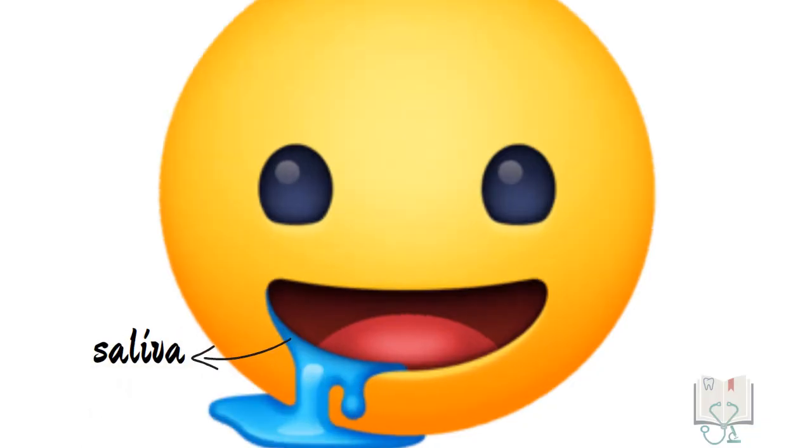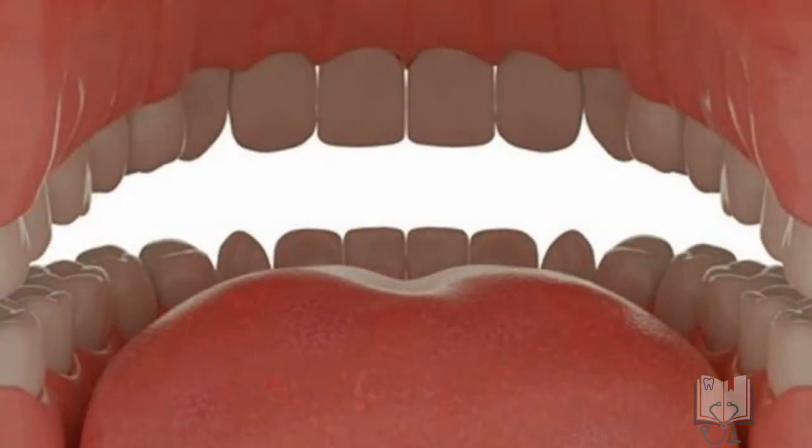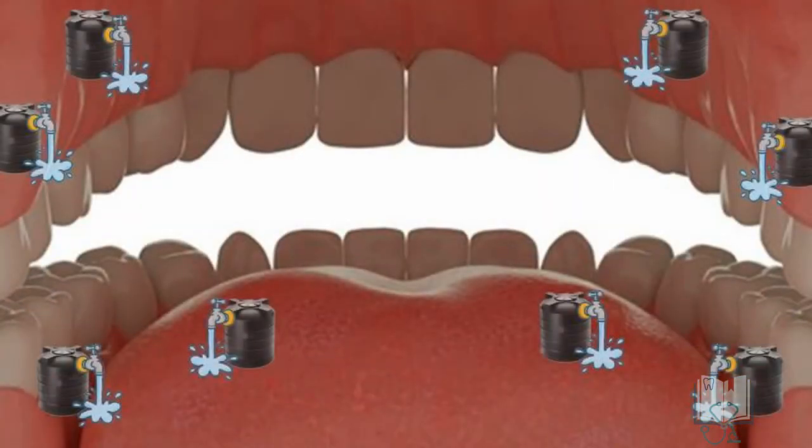The oral cavity is kept moist with a film of fluid called saliva. This saliva is released by numerous glands all around the oral cavity called salivary glands.